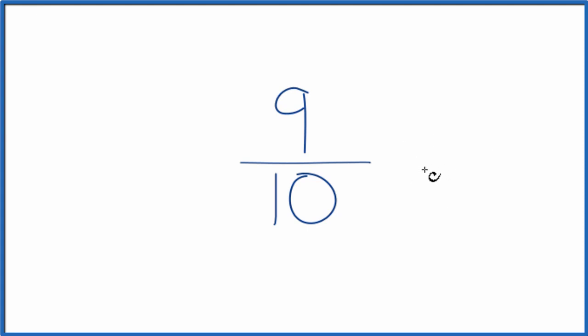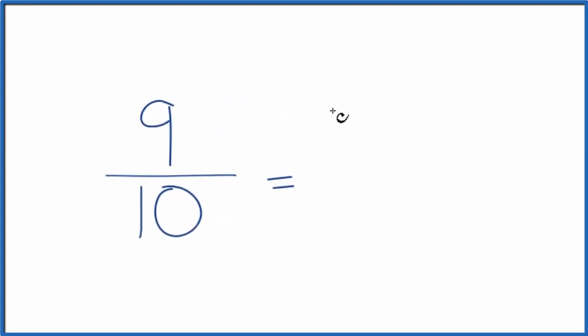So to do that, we could multiply the numerator and the denominator by 2. 9 times 2 is 18. 10 times 2 is 20. And 18 twentieths, that's an equivalent fraction to 9 tenths. If you divide 9 by 10 or 18 by 20, you get the same answer, 0.9.